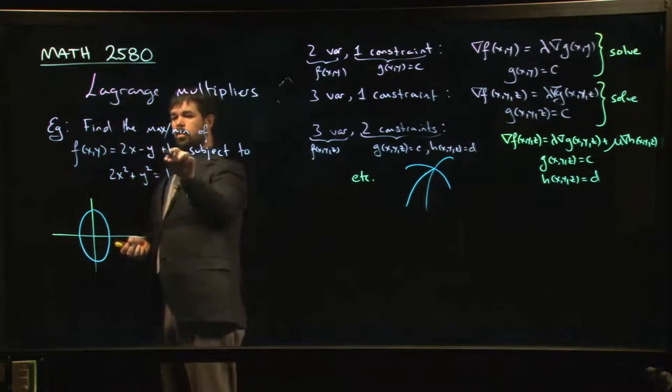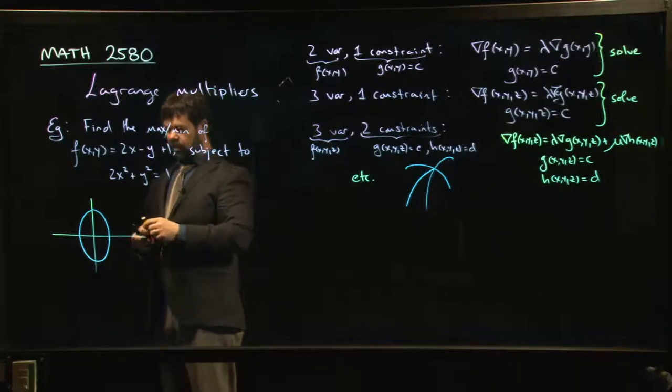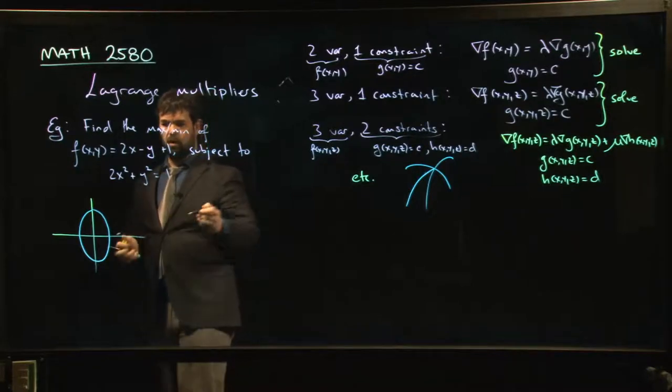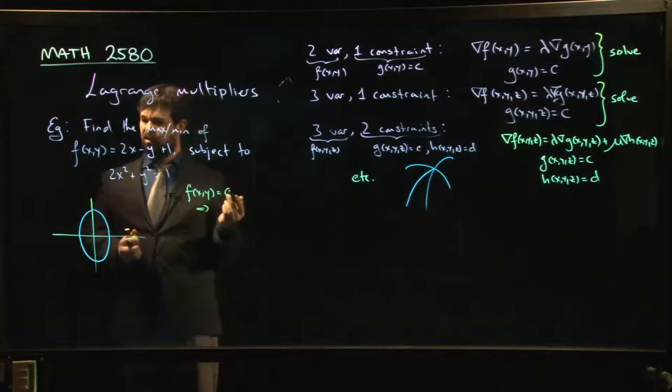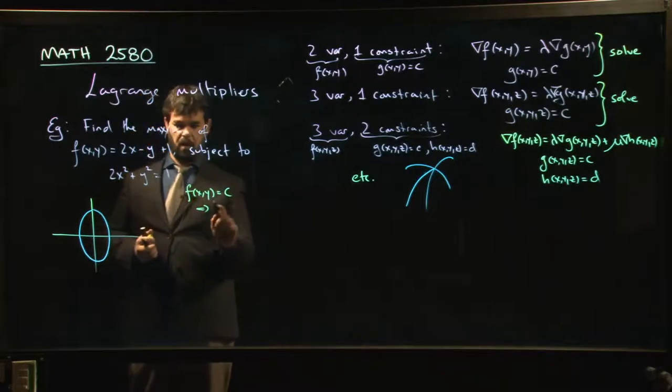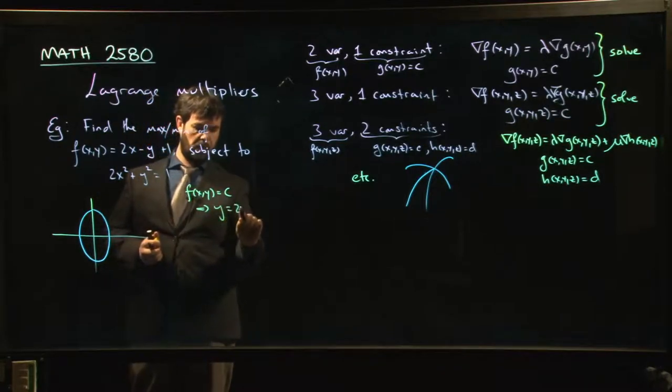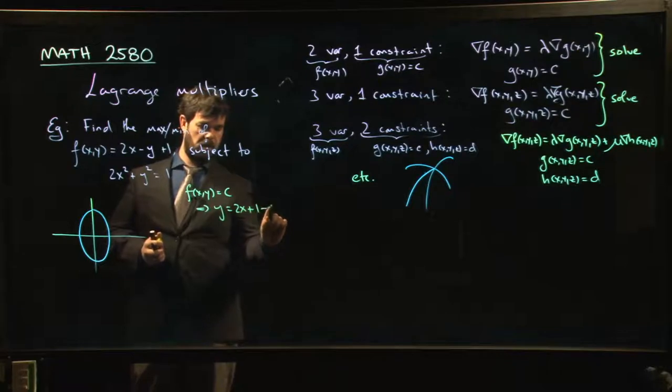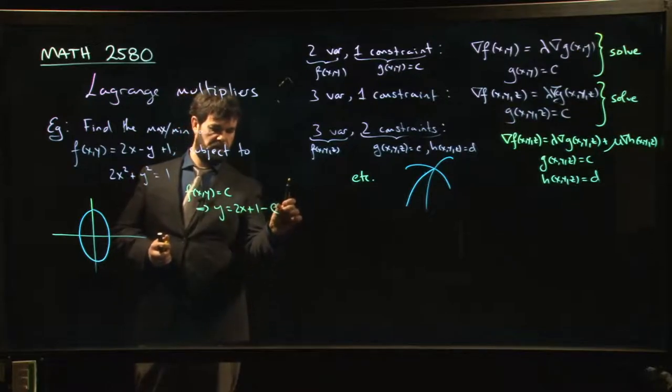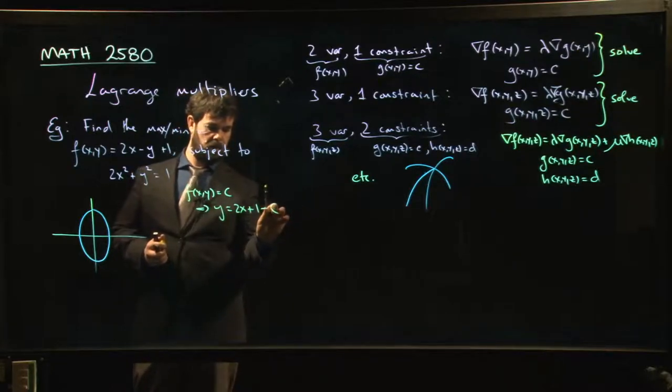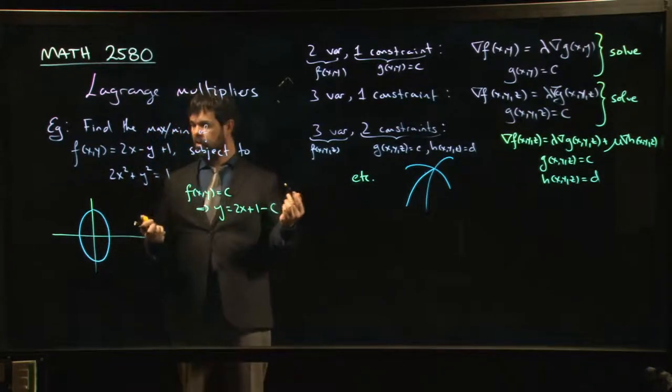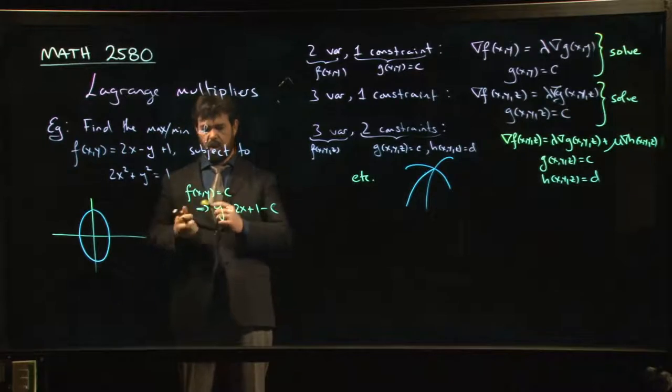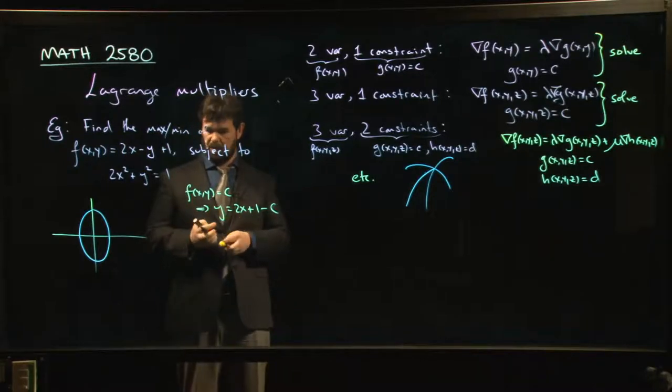Now, the level curves for my function - if I set f of x, y equal to a constant, if I take f of x, y and I set that equal to c, well, that's pretty much the same thing as I can move the y over and say y is going to be 2x plus 1 minus c. Well, you know what that is. That's a line with slope 2 in a particular intercept. I know how to draw a line with slope 2 in a particular intercept.